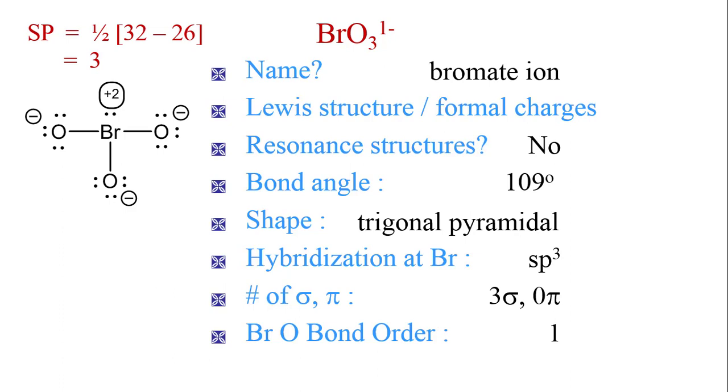Smaller formal charges can be had if we break the octet rule, as in this structure. In the bottom structure, there are 12 electrons around bromine, clearly violating the octet rule. But this structure has formal charges closer to zero.